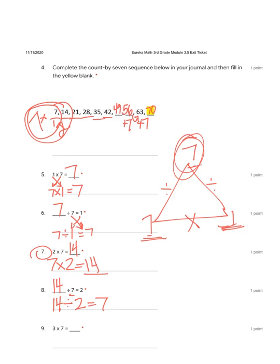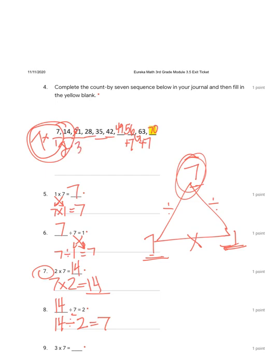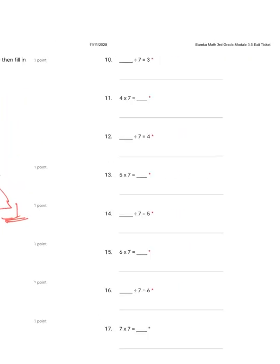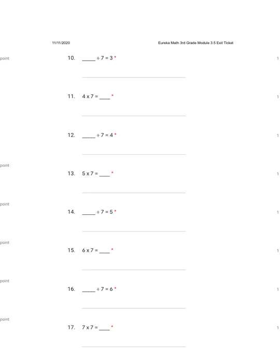Number nine: three times seven. If you're not sure, count by seven three times — fourteen, twenty-one. So our answer is 21. Commutative property: seven times three also equals 21. Number ten: twenty-one divided by seven equals three. We could also divide by three: twenty-one divided by three equals seven. So our fact triangle is 21 ÷ 7 = 3, 21 ÷ 3 = 7, 7 × 3 = 21, and 3 × 7 = 21.